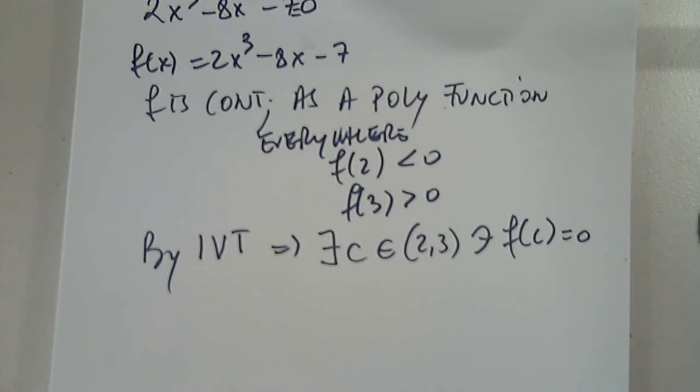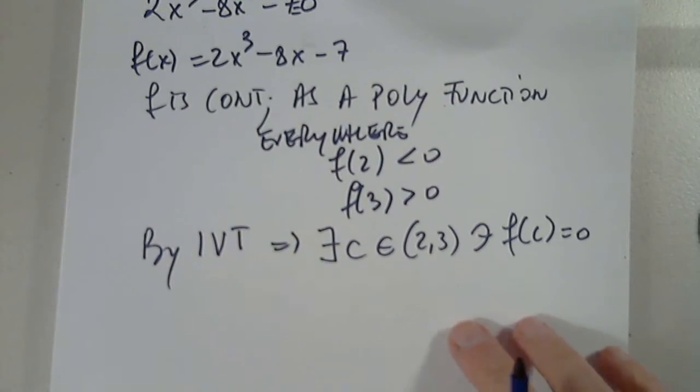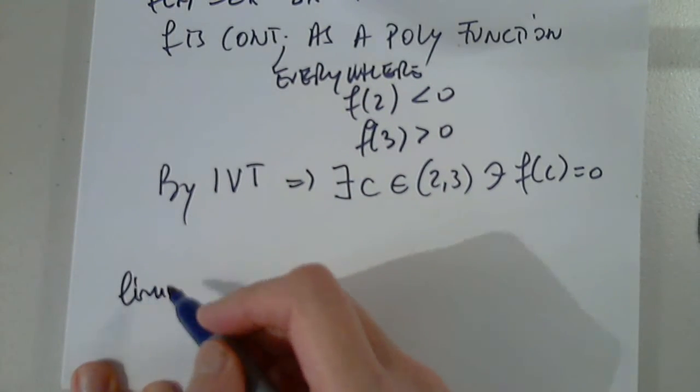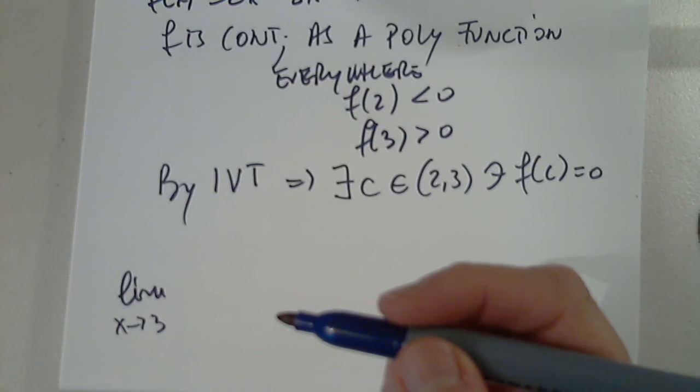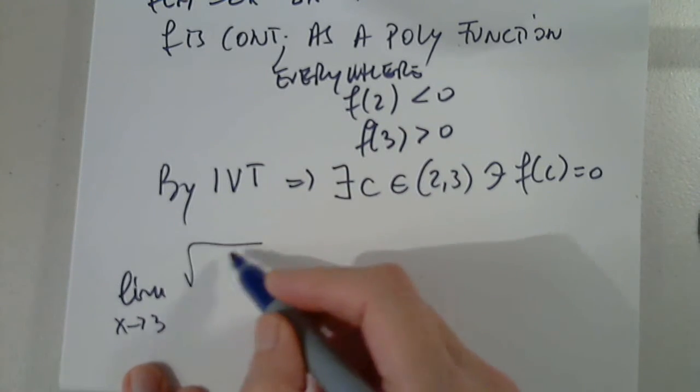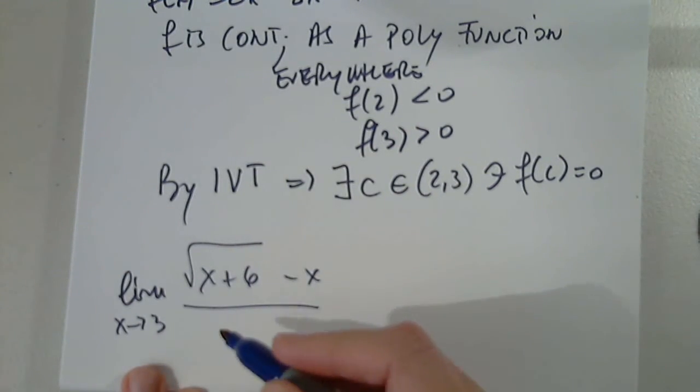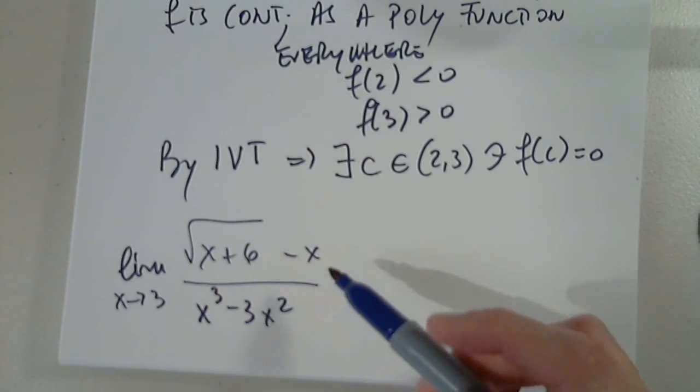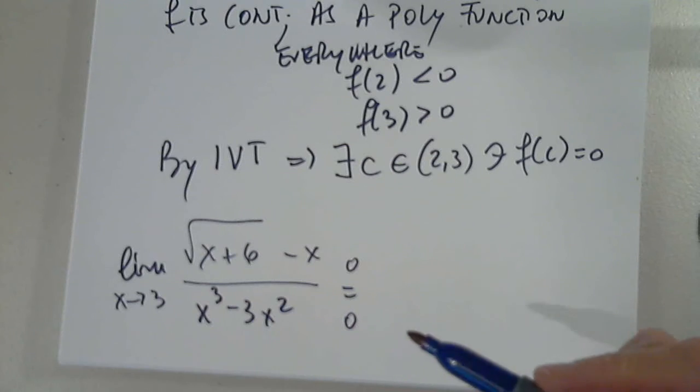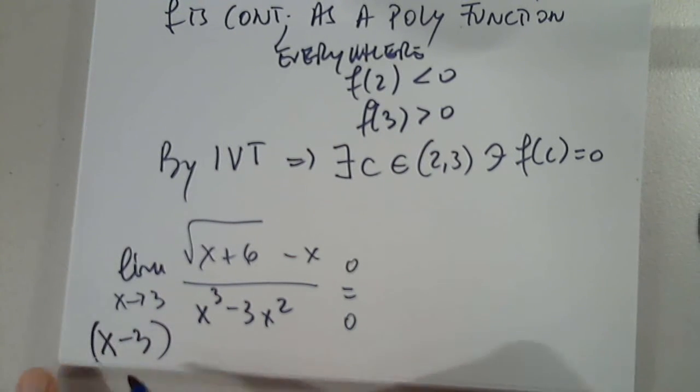Could we do 5e? Yes. So limit the same thing. You just have to rationalize. That's the whole thing. Very similar to that one with infinity minus infinity. X plus 6 minus x divided by x cubed minus 3x squared. So when I plug in 3, I get 0 and I get 0. So obviously I'm hoping for an x minus 3 to go away.